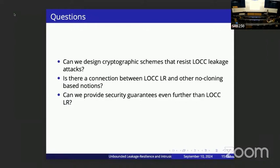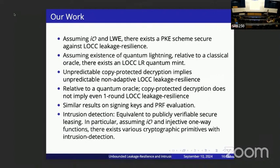Can we provide security guarantees even stronger than LOCC leakage resilience? We show that assuming indistinguishability obfuscation and LWE — strong but somewhat common cryptographic assumptions — you can construct public key encryption schemes that resist LOCC leakage attacks. Assuming the existence of quantum lightning, relative to a classical oracle, we can construct a quantum money scheme where the adversary gets banknotes plus LOCC leakage on the bank's secret key and still cannot produce an extra banknote.